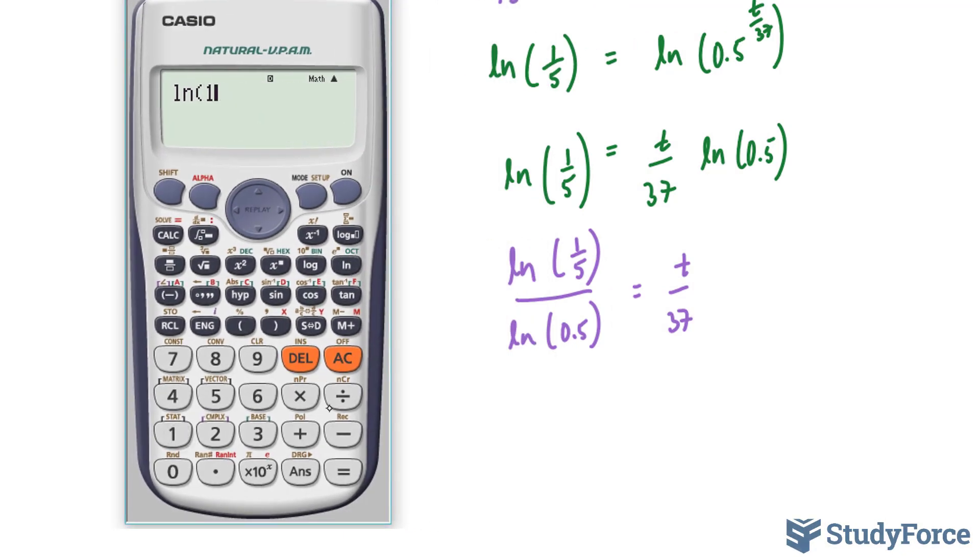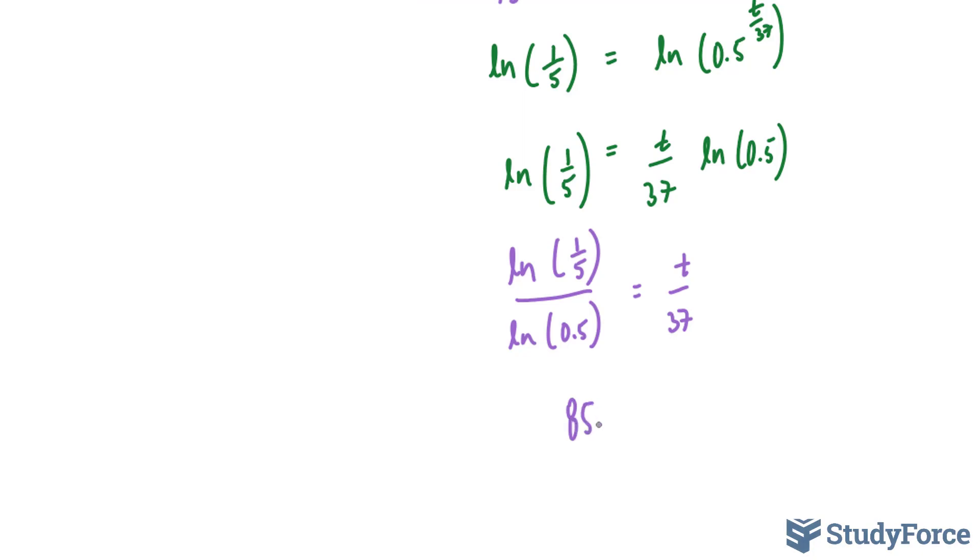So we have ln 1 over 5, writing this part down, divided by ln of 0.5, writing this part down, is equal to that amount, times 37 gives us 85.9. 85.9 is equal to t.